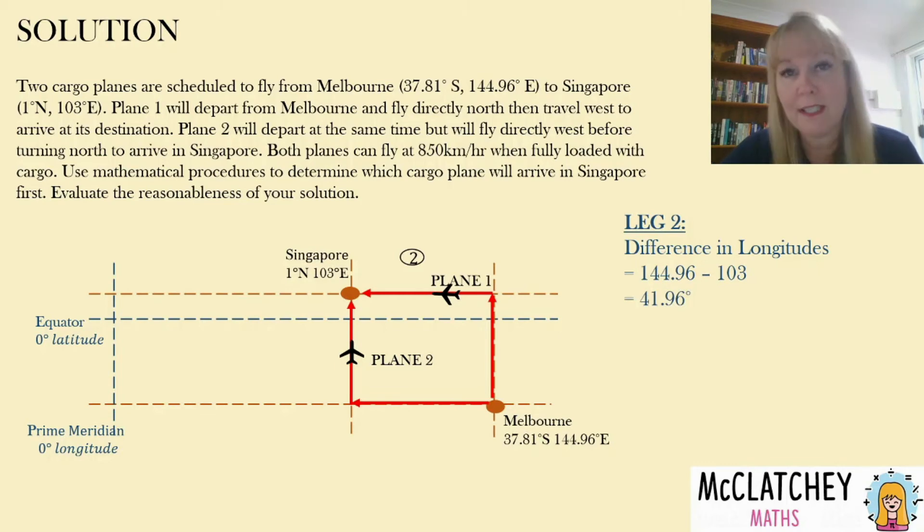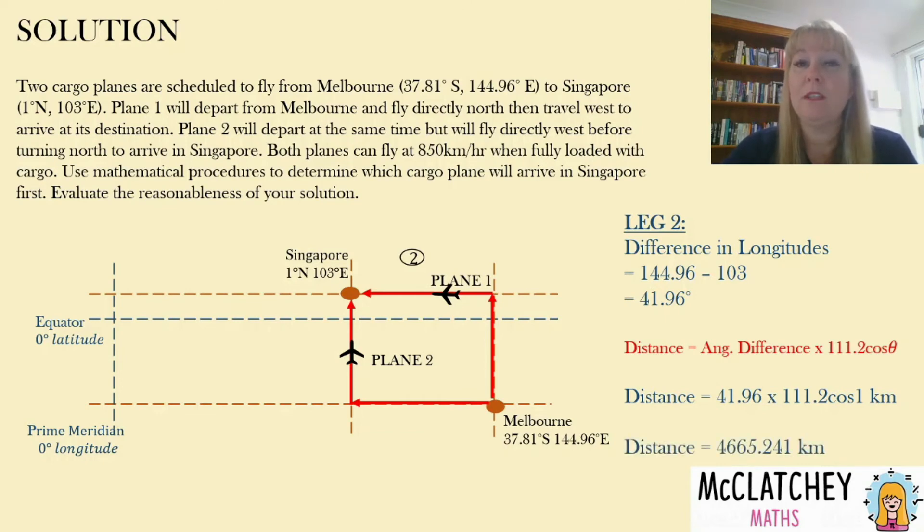So now we're traveling on the same line of latitude and that means we use the formula with the cosine of theta in it and cosine of theta is that common latitude that they both have which is going to be one degree. So then if we substitute in there that angular difference of 41.96 and multiply that by 111.2 cosine of one, we get a total distance for plane one of 4,665 in that westerly direction. Of course we need to add the two together and we'll get to that in a moment.